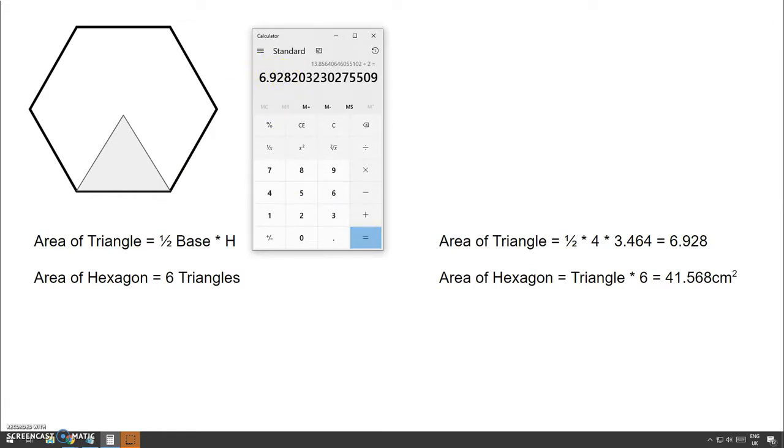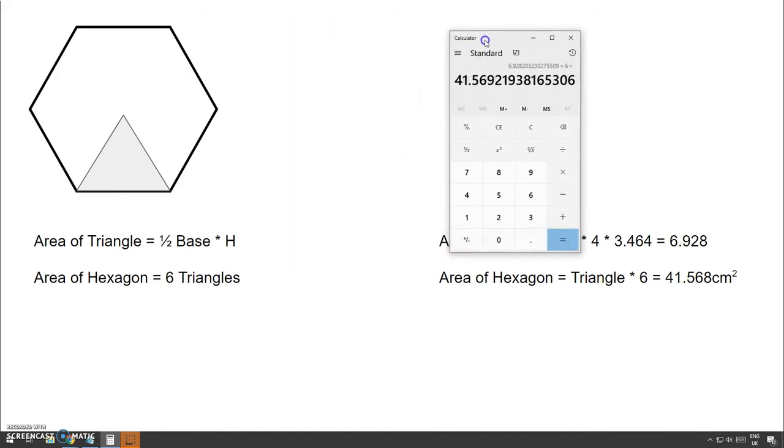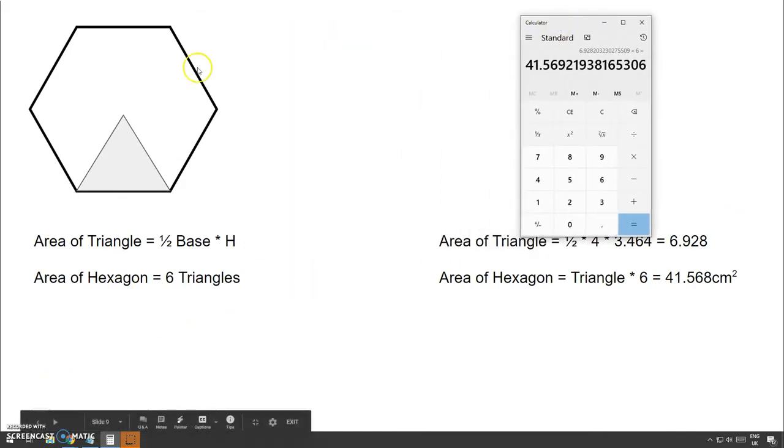There we go. Good. And then all we need to do now is to multiply by 6 to get all 6 triangles. There we go. And there you go. So, that's 41.5692 or 41.57. There you go. So, that is how you work out the area of a regular hexagon. There you go. Thank you very much.